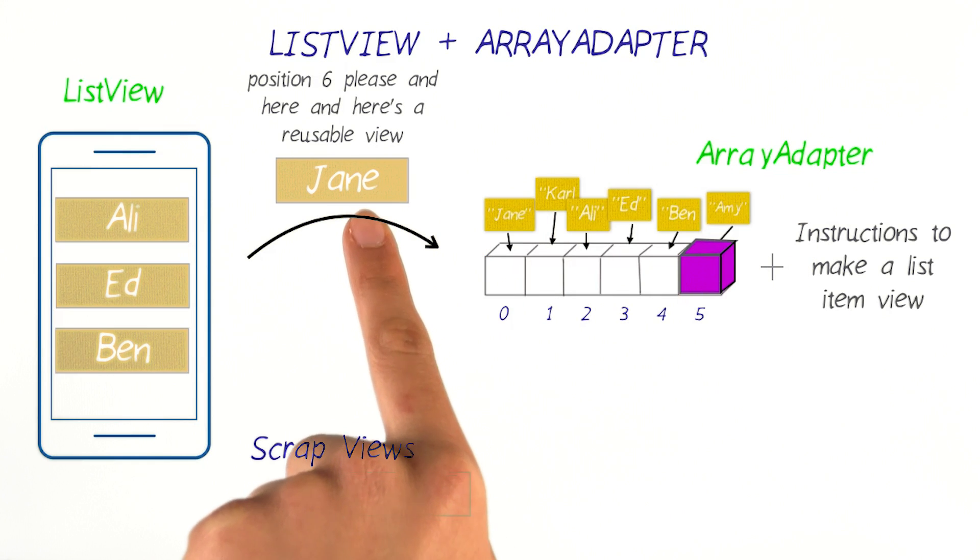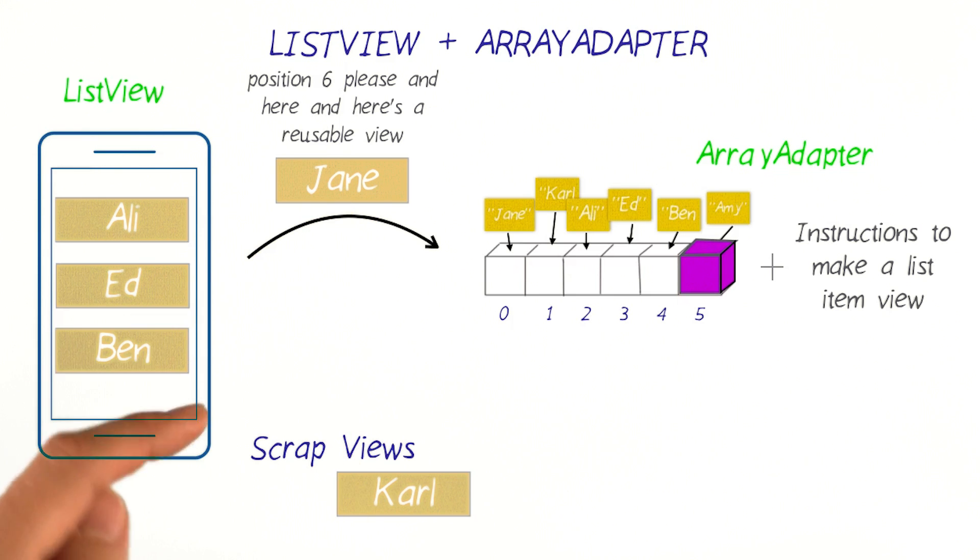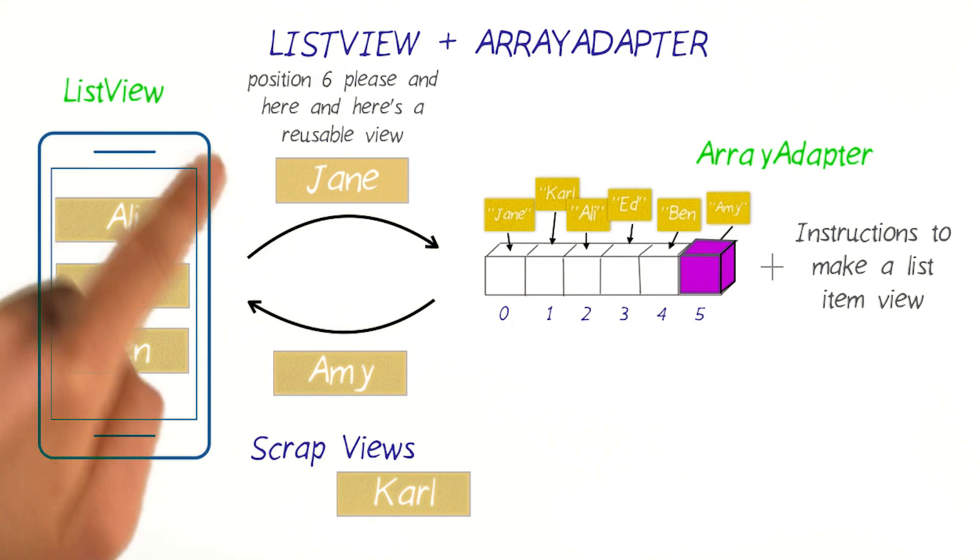Now the array adapter can use the recycled view by just replacing the data inside of it. For example, by calling the TextView setText method to change the name here. And now it looks like a brand new list item that we can return to the list view to be added to the view hierarchy and displayed on screen.